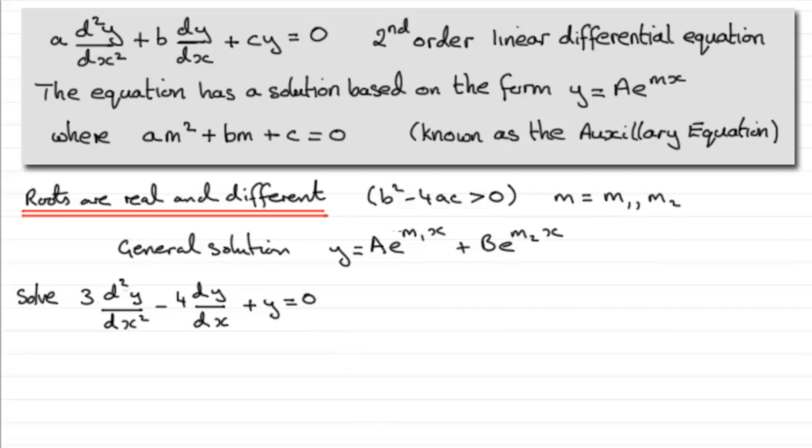Okay, welcome back if you had a go, so let's see how you got on. Well, first of all we've got to work out what that auxiliary equation is. So just write that in here, and I'd always encourage you to do that. The auxiliary equation is going to be 3m squared minus 4m plus 1 equals 0.